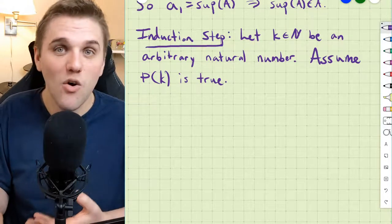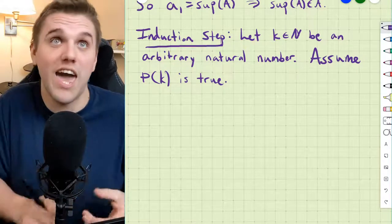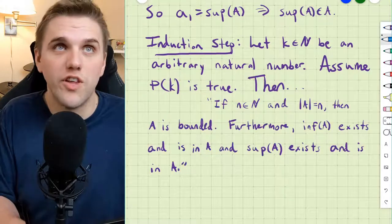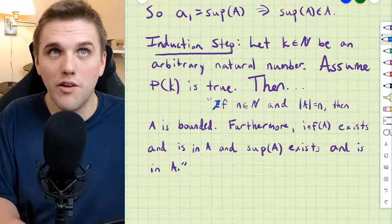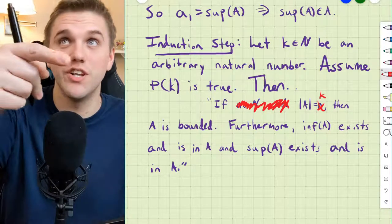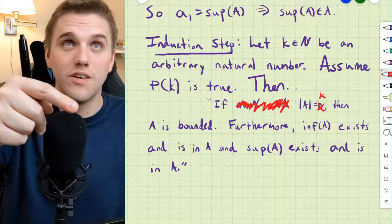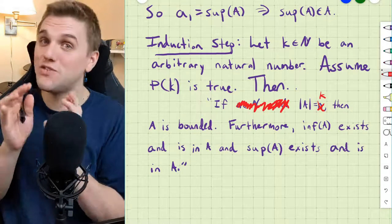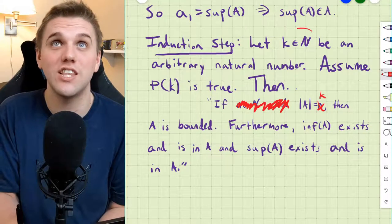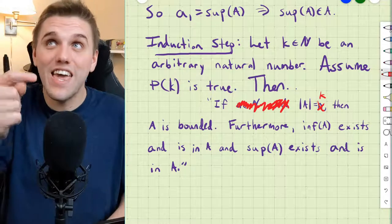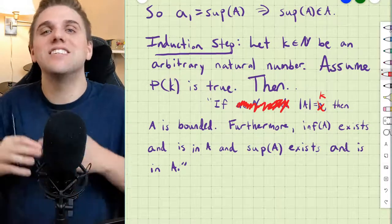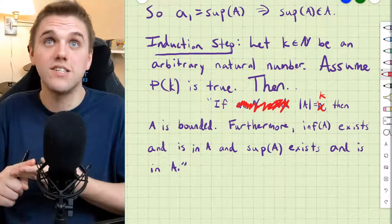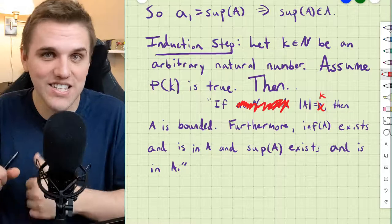So what does assuming P(K) mean exactly? We know what P(N) is, so we just substitute N with K. If the size of A equals K — this specific arbitrary constant — then we get to assume that A is bounded, the infimum of A exists and is in A, and the supremum of A exists and is in A.